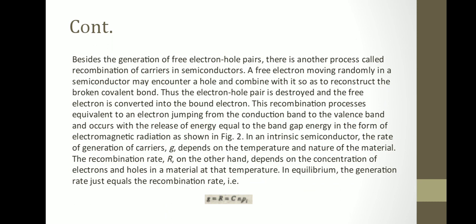Besides the generation of free electron-hole pairs, there is another process called the recombination of carriers in semiconductors. The electron moving randomly in a semiconductor may encounter a hole and combine with it to reconstruct the broken covalent bond. Thus, the electron-hole pair is destroyed and the free electron is converted into a bound electron. This recombination process is equivalent to an electron jumping from the conduction band to the valence band, and occurs with the release of energy equal to the band gap in the form of electromagnetic radiation.